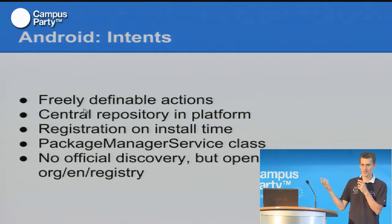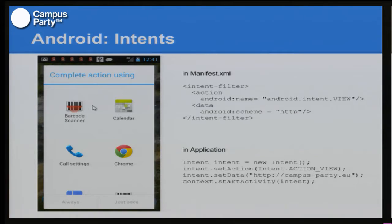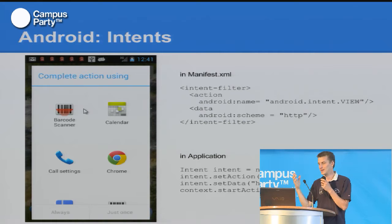The problem is how you can discover the services. You are a developer and you want to delegate the task, but you don't know whether there's already a service for this. Currently there's no official discovery — you can't browse Google Play to look for services you can delegate to. So there's the website openintents.org where we try to collect all this information about the different applications that offer third-party services.